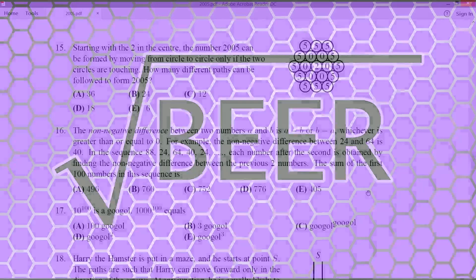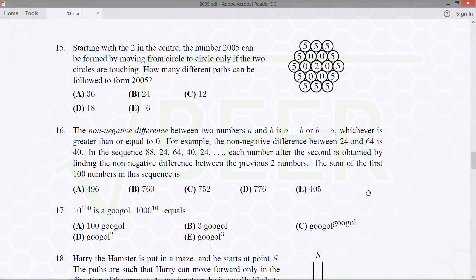Hello everybody and welcome back. We're looking at question 16 now as we continue our walkthrough of the 2005 Cayley competition. The non-negative difference between two numbers a and b is a minus b or b minus a, whichever one is positive, which is greater than or equal to zero.